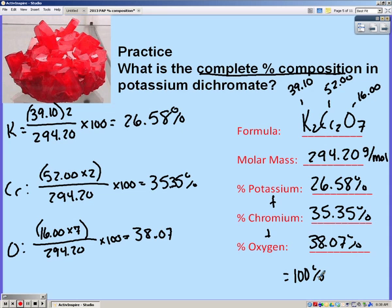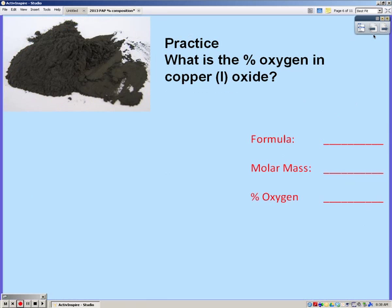If you add potassium, chromium, and oxygen percents up, you should get 100. Go ahead and pause the video and try this one on your own. Your formula should have been K2O, which gives you a molar mass of 143.10 grams per mole.